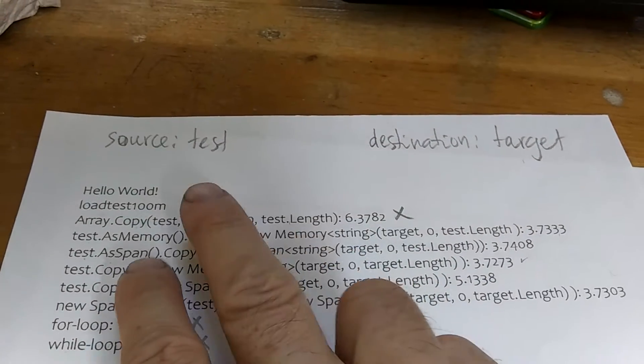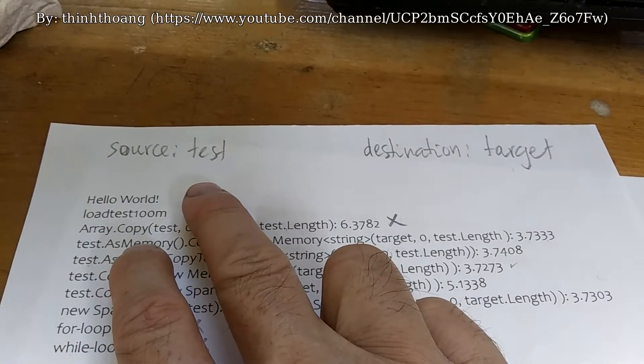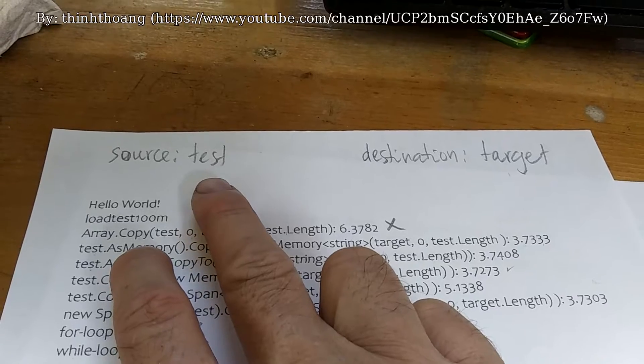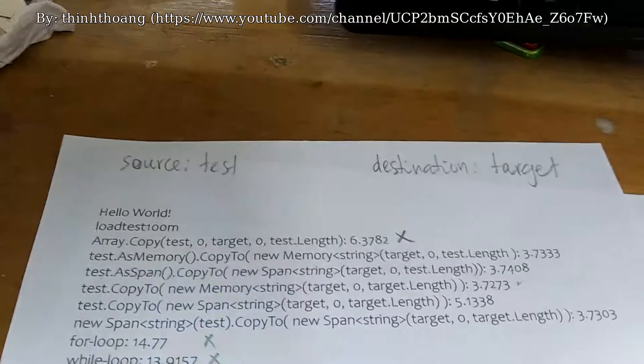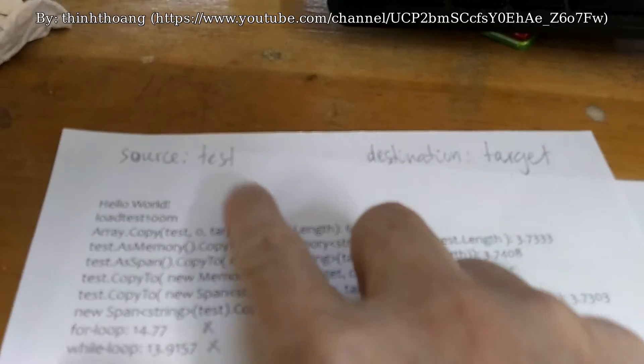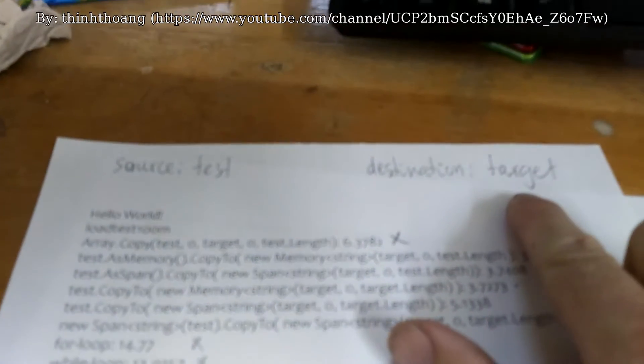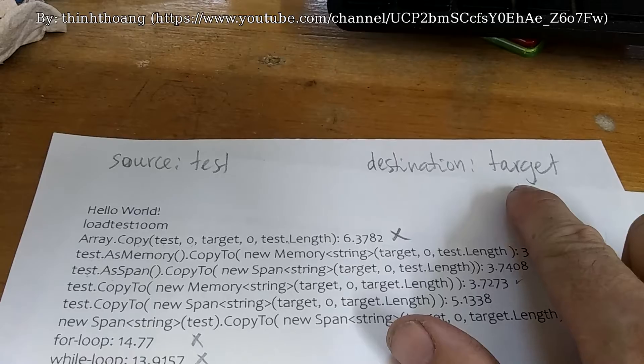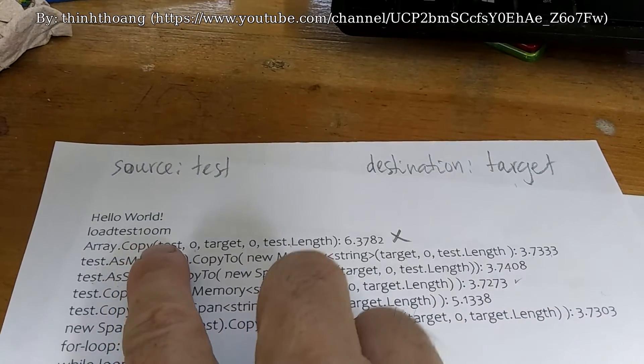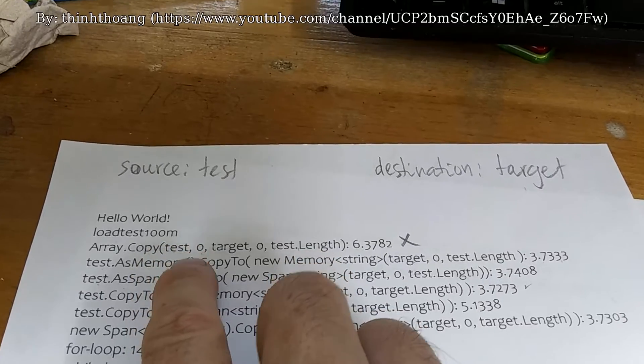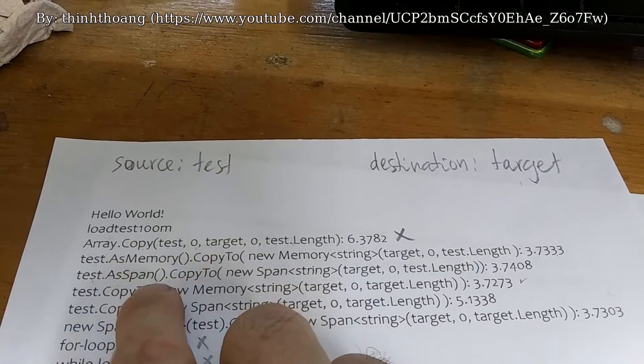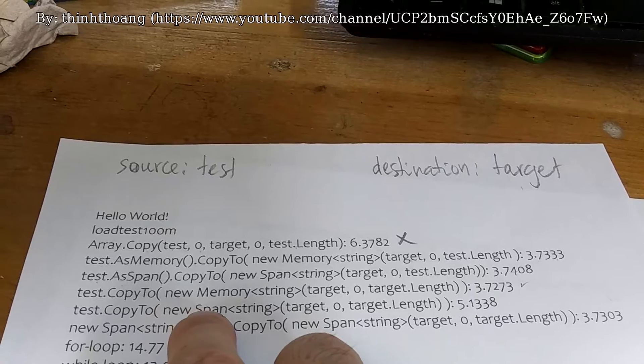Hello everyone, this video is about copying elements from one array to another. Test is a string array variable, target is a string array variable. The input file contains 100 million numbers as strings. These are built-in methods of C#.